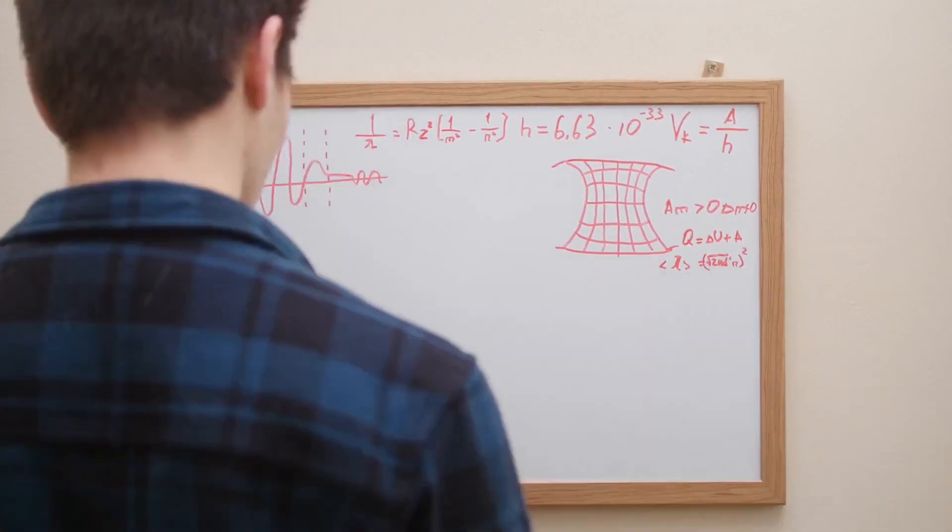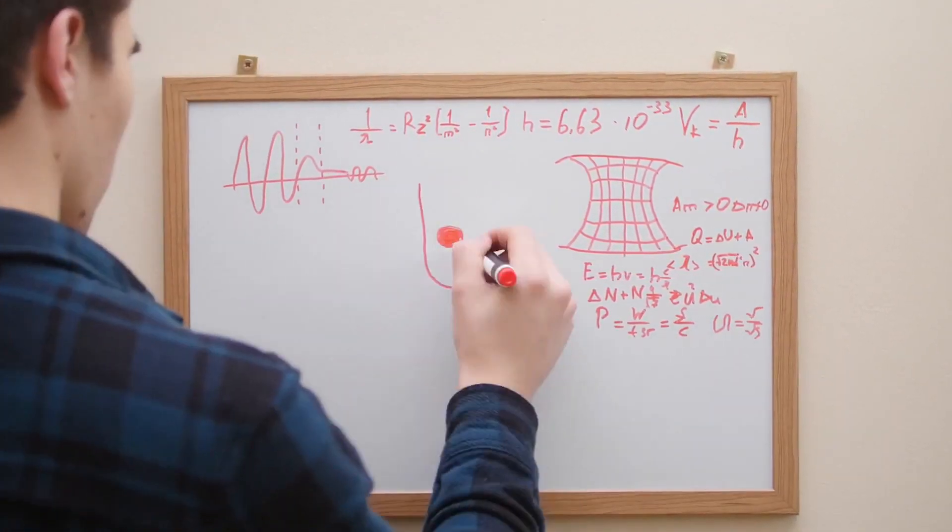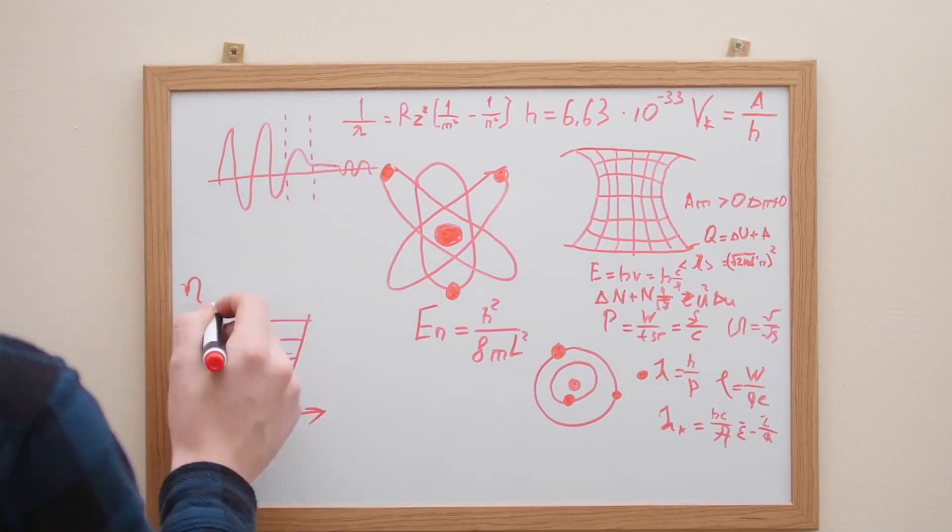Just as a pencil balanced precisely on end will, according to the laws of classical physics, remain forever vertical.